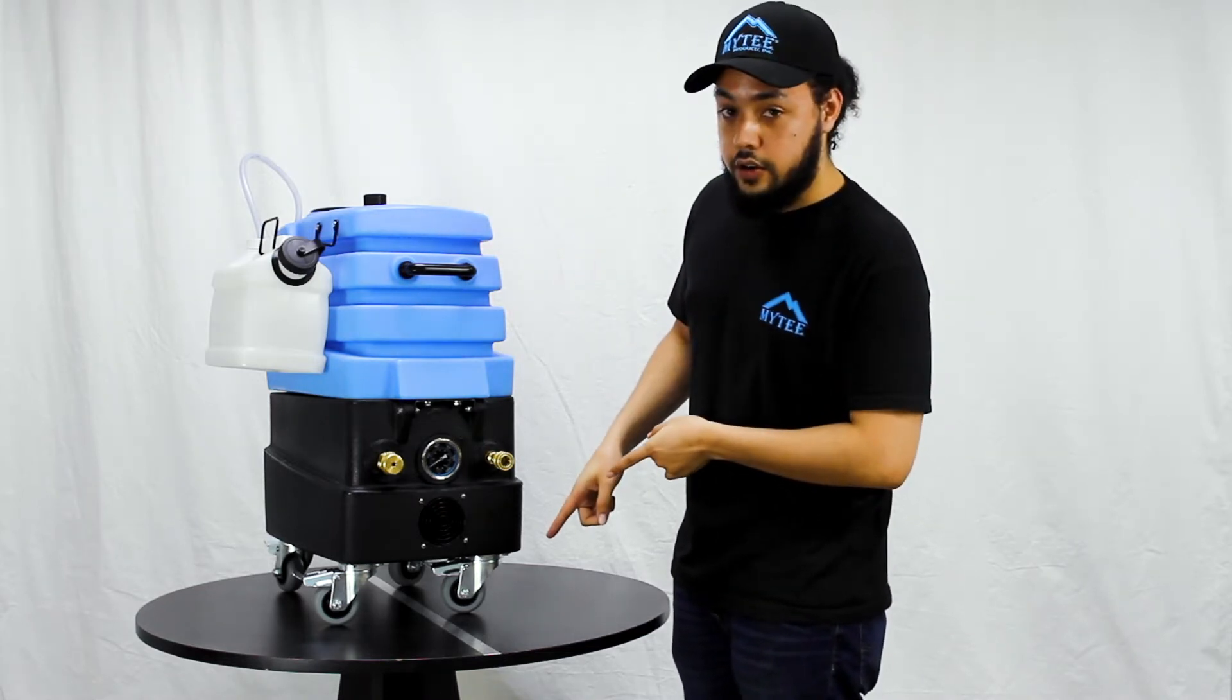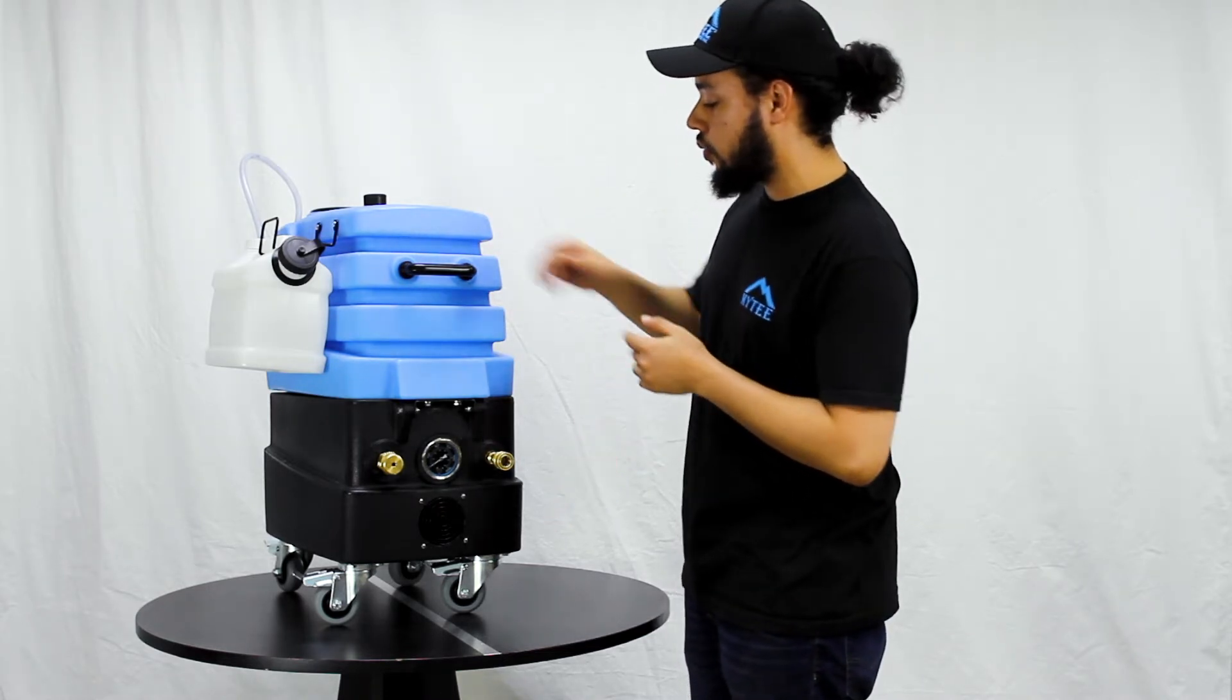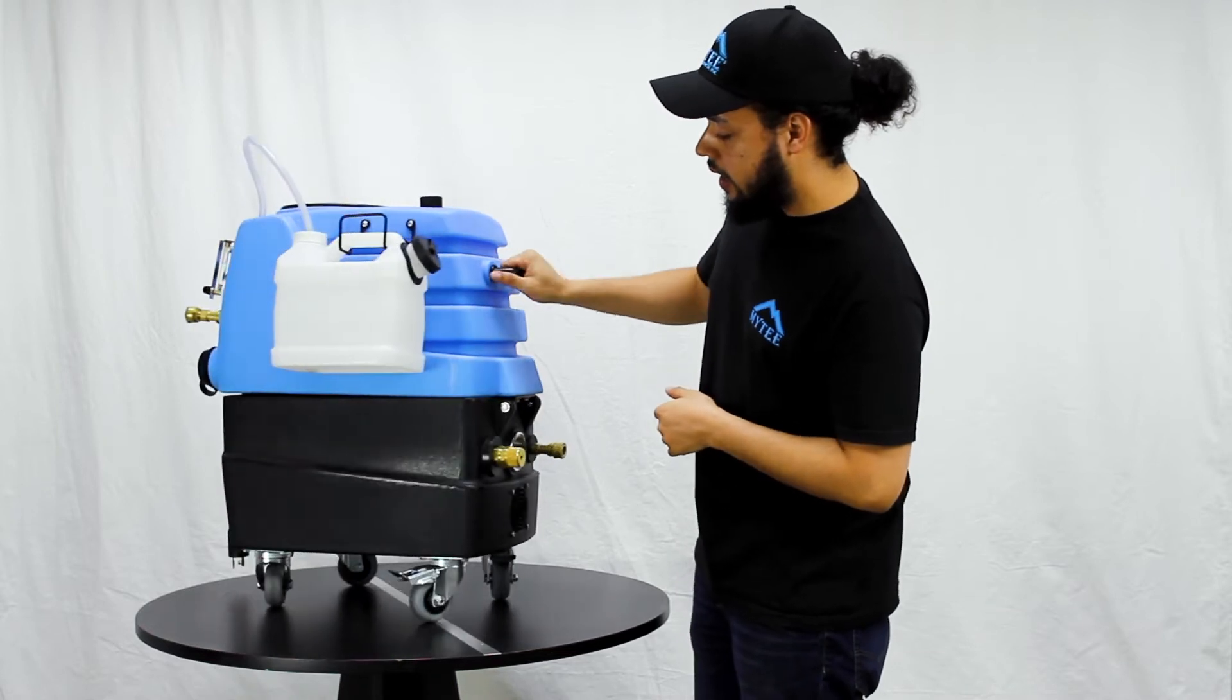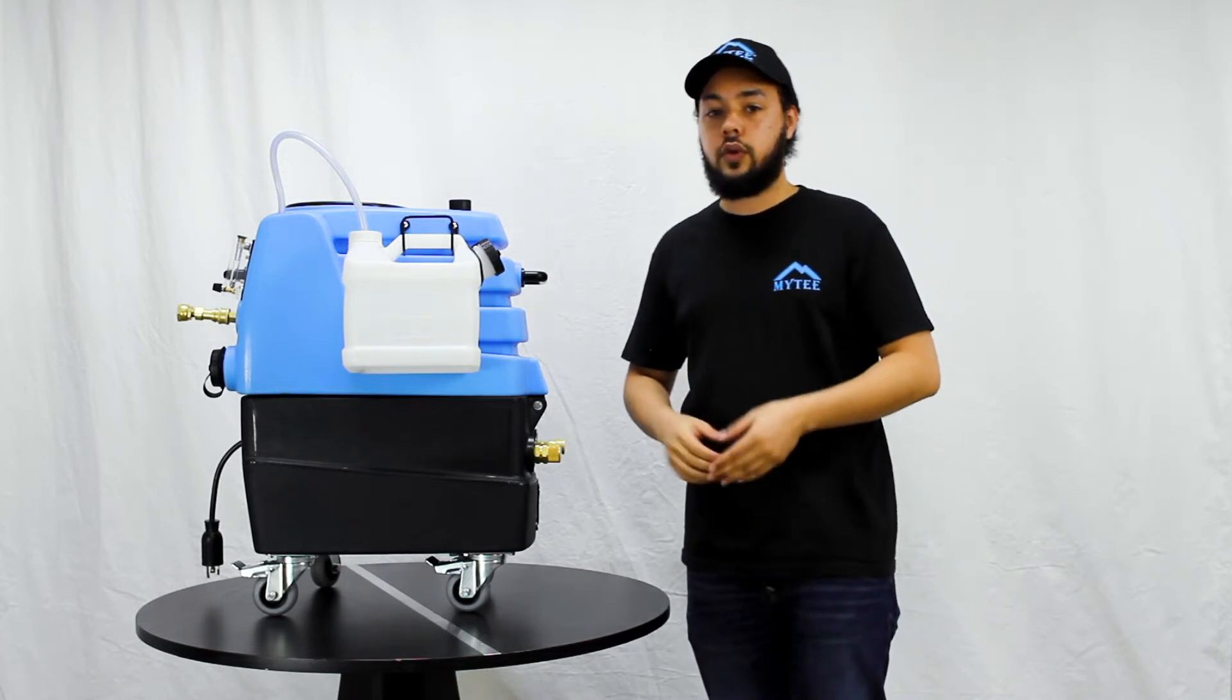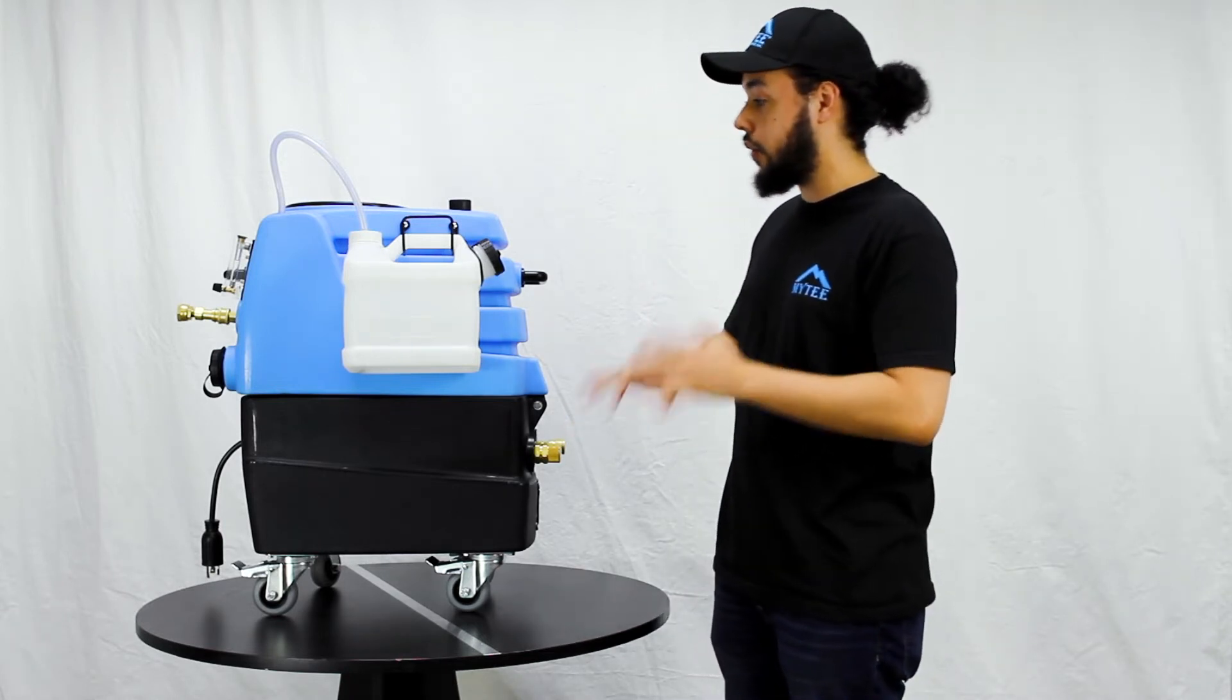Taking a look underneath the machine, we've got those rolling casters there. They are gonna make it nice and easy to maneuver this machine around, and they also have locks on all four of them, so when I need the machine to stay in place, it will.